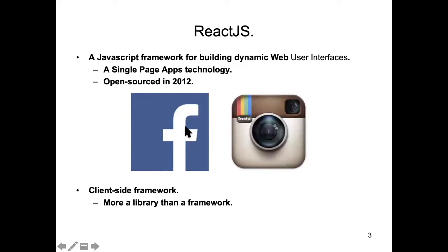In the software world, a lot of software tools and frameworks begin life as an in-house project in a software house, and the organization decides to open source it to the general community. That's the case with React. React began life as an in-house project at Instagram, before it was acquired by Facebook — this was back in the very early 2000s. When Facebook acquired Instagram, they liked the framework and used it a lot for in-house stuff, then open sourced it around 2012.